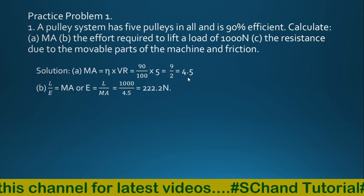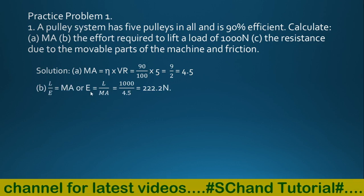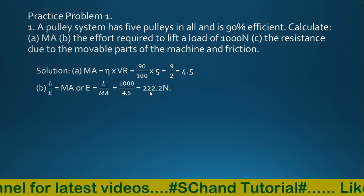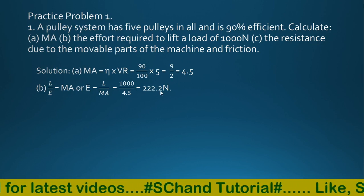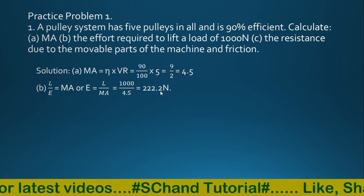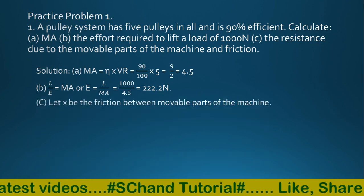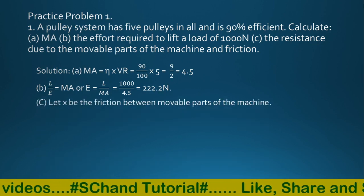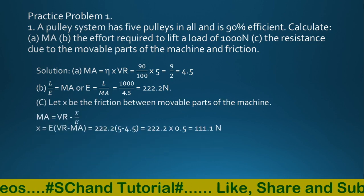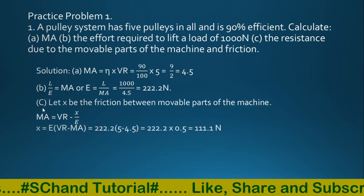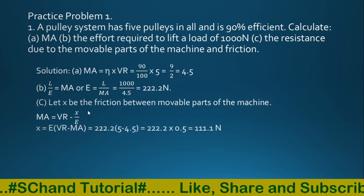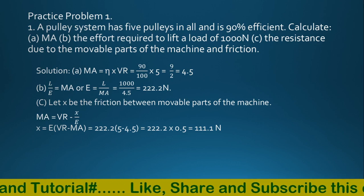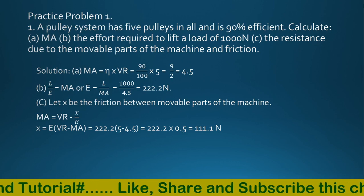Load over effort equals mechanical advantage, so effort equals load over mechanical advantage. That comes to 2.29 Newton. Now, x is the friction between the movable parts of the machine. Mechanical advantage equals velocity ratio minus x over e, so x equals e into velocity ratio minus mechanical advantage.